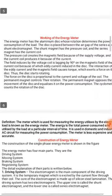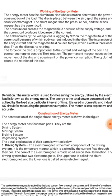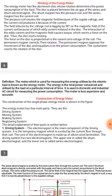What is the working of energy meter? The meter which is used for measuring the energy utilized by the electric load is known as the energy meter. The energy is the total power consumed and utilized by the load at a particular interval of time. It is used in domestic and industrial AC circuits for measuring power consumption. The meter is less expensive and accurate.